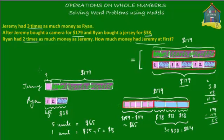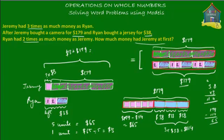So one pink box equals $13. Looking back at Jeremy's sum of money, the question mark — the remaining pink block — equals $13. Now we can find how much Jeremy had at first: it's simply $13 plus $179 — the pink box plus the shaded green box. That's 192 dollars. So that's how much money Jeremy had at first.